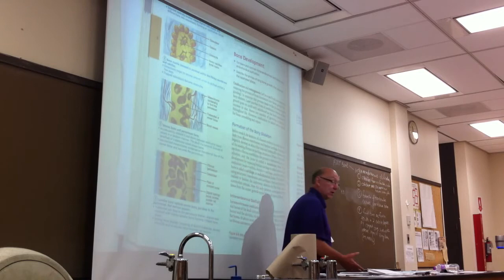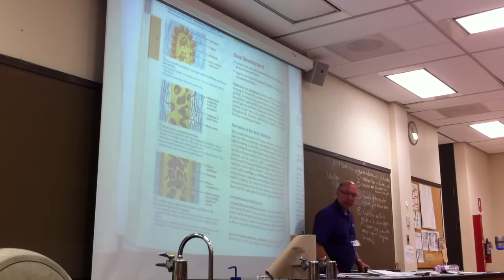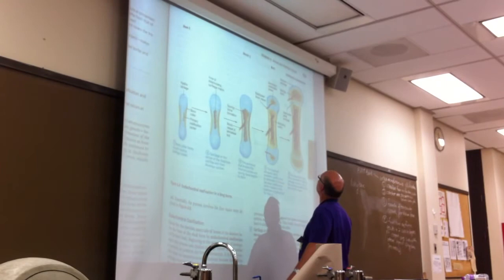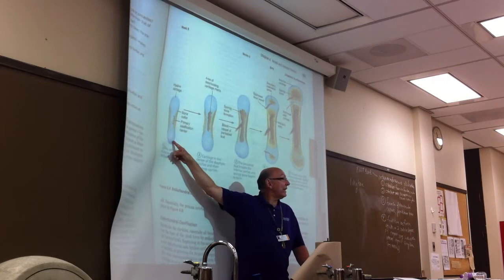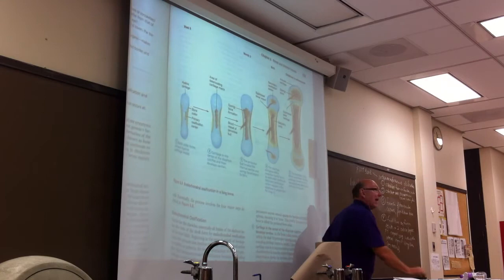Now what can we say about the other one — endochondral ossification? Endochondral is a little bit different. You look at this really tiny structure — as I said, I think this is going to be a humerus when it grows up. This is what you're seeing in the fetus shortly after conception, when the skeleton starts to be laid down. The first thing that is different about endochondral ossification...